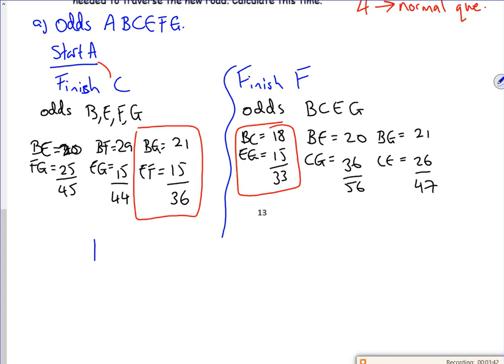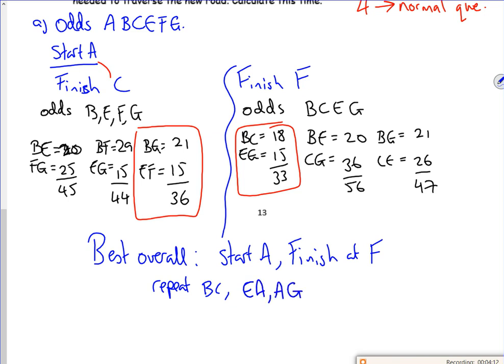So which one is best overall? Start at A, finish at F, and repeat BC and EG. But EG has to be E to A and A to G - remember you have to use different routes. The solution to that will be 154 plus 33 to give us 187 minutes.